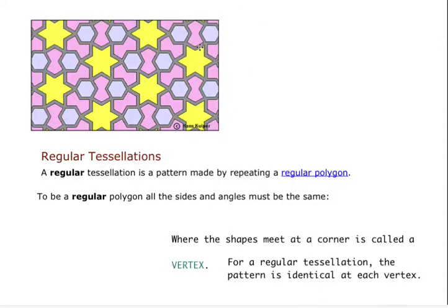So if we look at this star, each angle would be the same. If we look at this hexagon, each angle is the same.